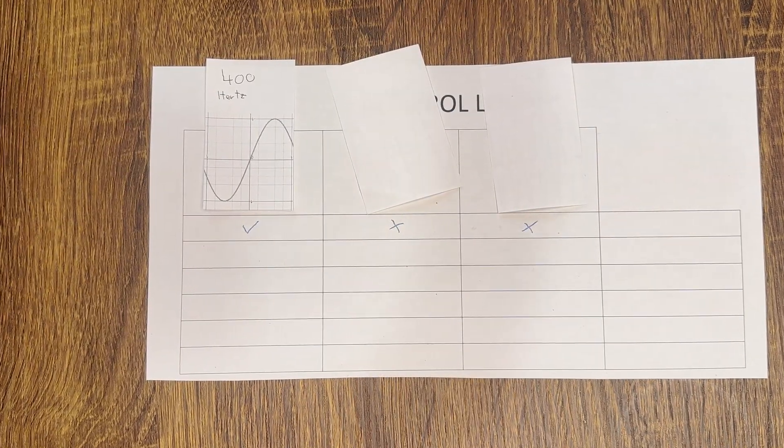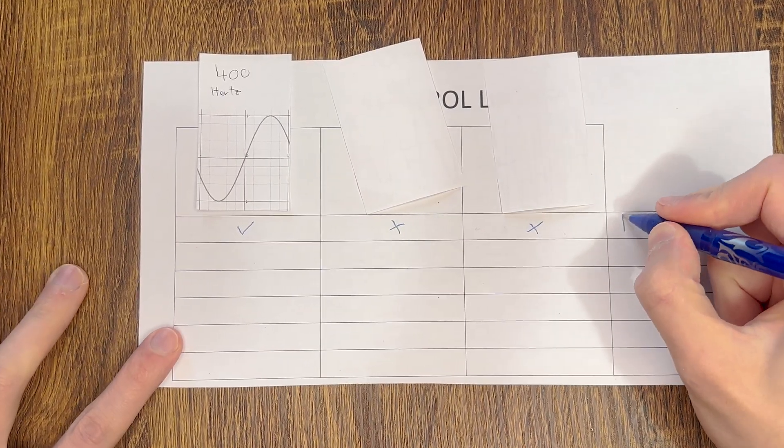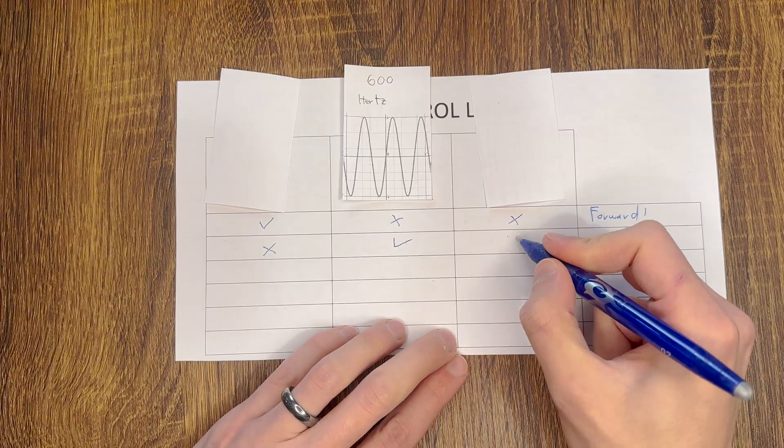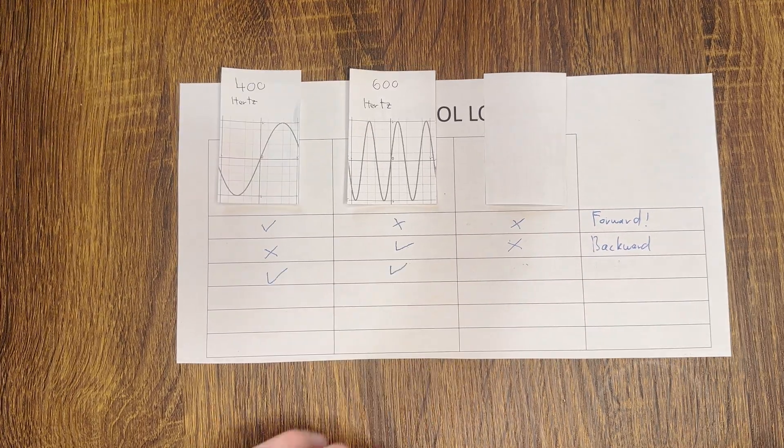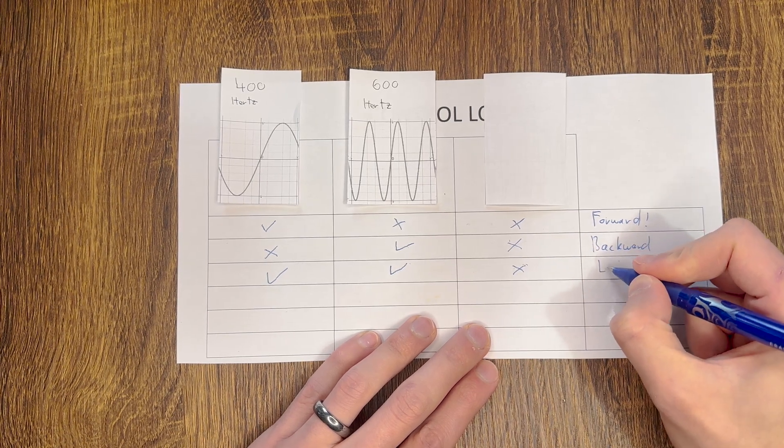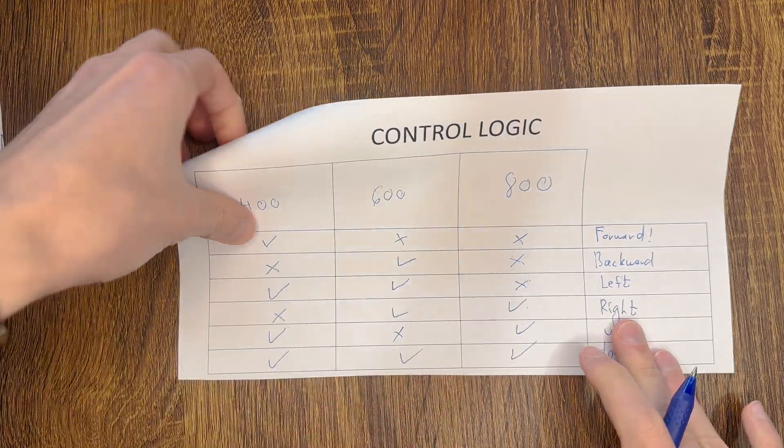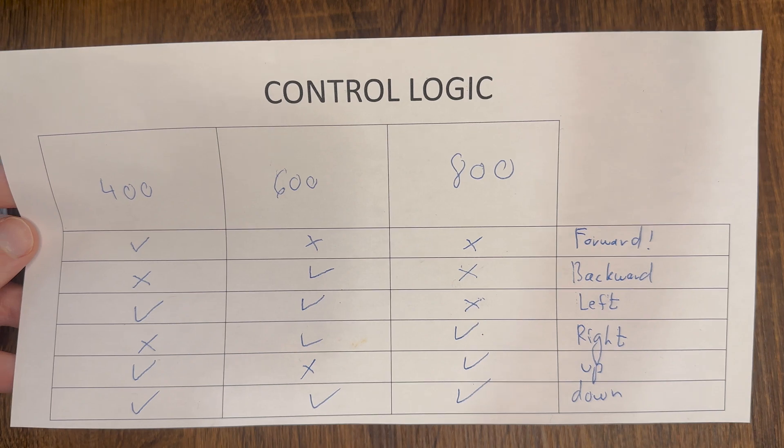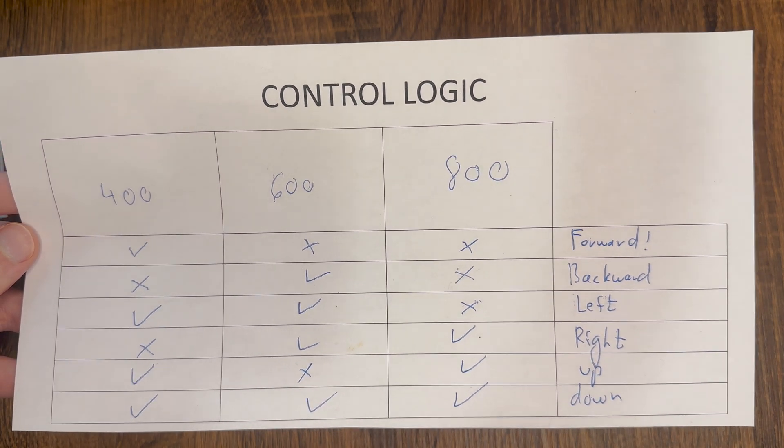For example, if I play a 400Hz tone on its own, it tells the submarine to go forward. If I play a 600Hz tone on its own, it goes backwards. If I play a 400Hz and a 600Hz tone, it goes left. By playing a combination of these three tones, I can command the submarine to go in any direction.